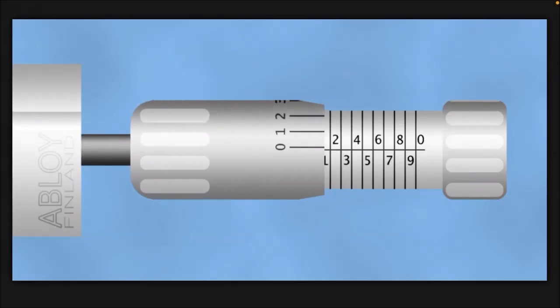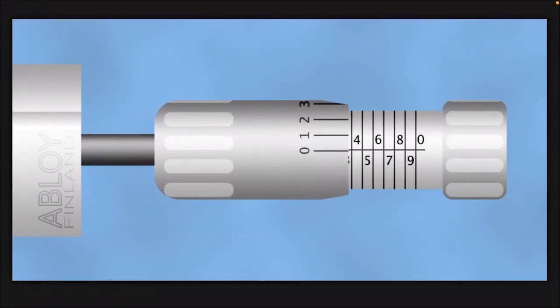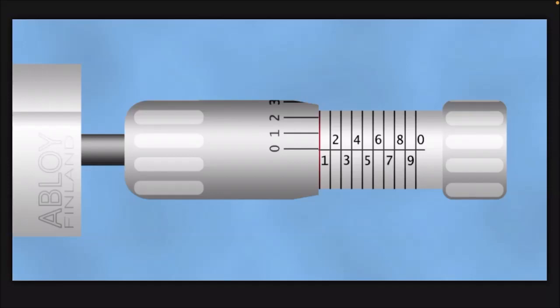So what you want to do to pick a Classic is to go through the disk pack and search for disks that are binding, so you can rotate them somewhere else until they're no longer binding, and then eventually it'll open. The way you check if a disk is binding is by trying to rotate it back and forth and watching how far it's able to rotate.